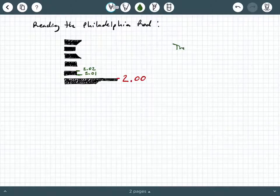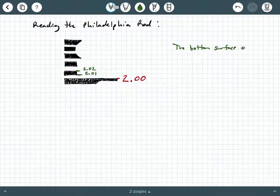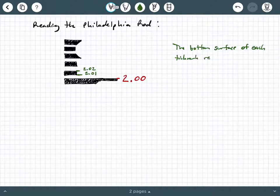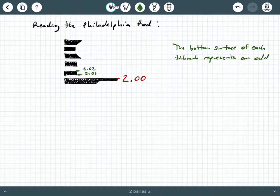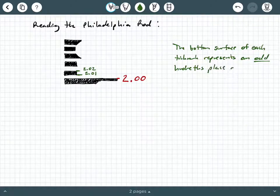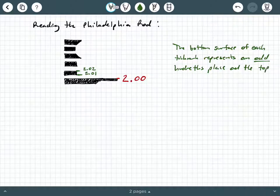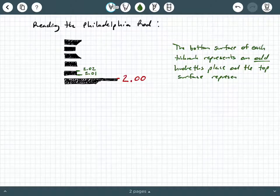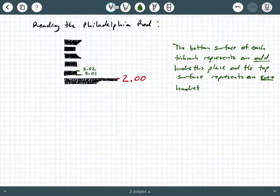So I'm going to make a note here. The bottom surface of each tick mark represents an odd hundredths place, and the top surface represents an even hundredths place.